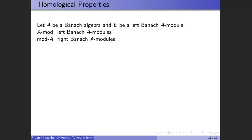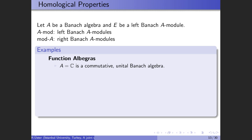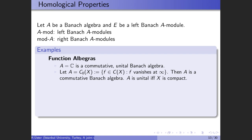Now I will give some homological properties. Let A be a Banach algebra and E be a left or right Banach A-module. We will use A-mod for the category of left Banach A-modules and mod-A for the category of right Banach A-modules. We can think of Banach algebras in three different categories. The first is function algebras: for example, C with pointwise multiplication is a commutative unital Banach algebra. Also, C_0(X) where X is a locally compact Hausdorff space, with pointwise product and supremum norm, is a commutative Banach algebra and is unital if and only if X is compact.